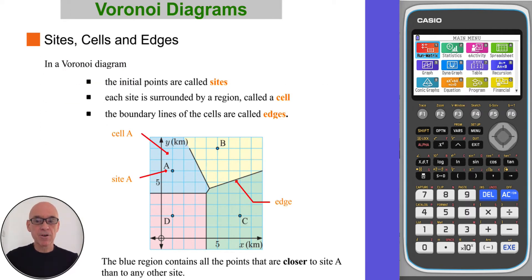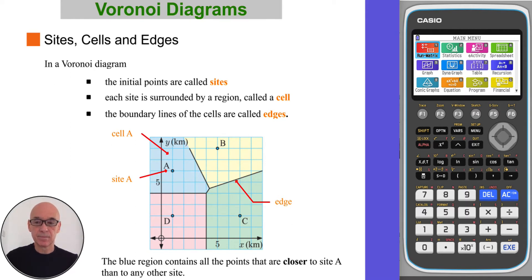In a Voronoi diagram, the initial points are called sites. So in the previous example, the sites A, B, C, D referred to the locations of the schools. Each site is surrounded by a region called a cell. So the coloured regions are the four different cells.